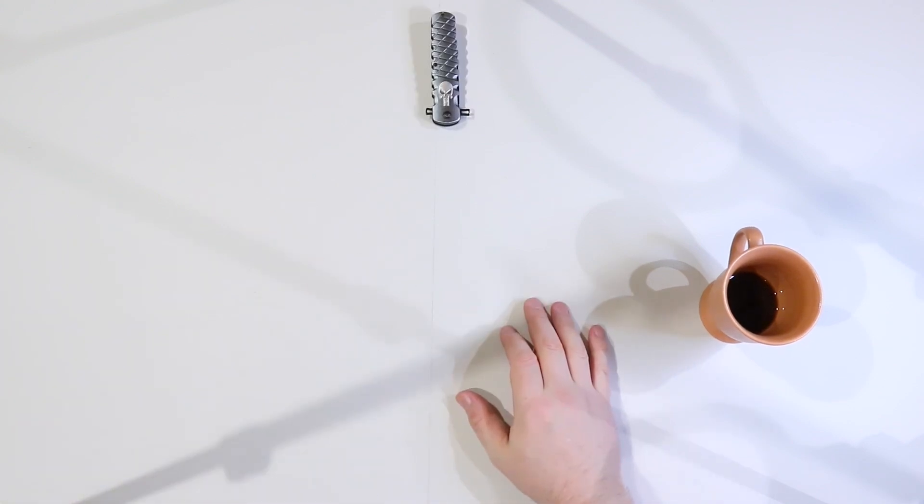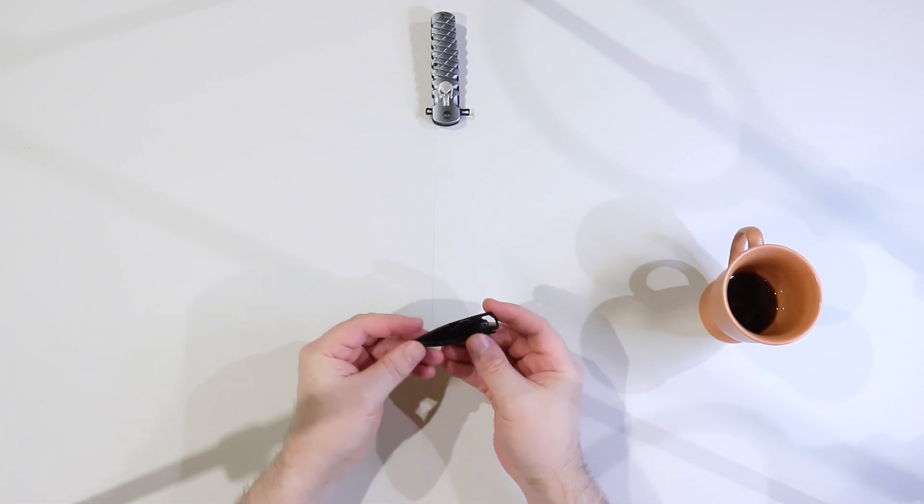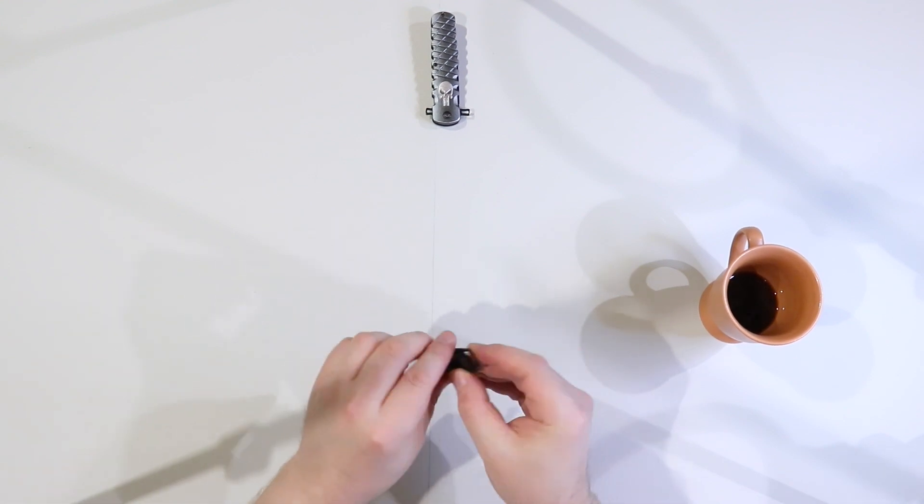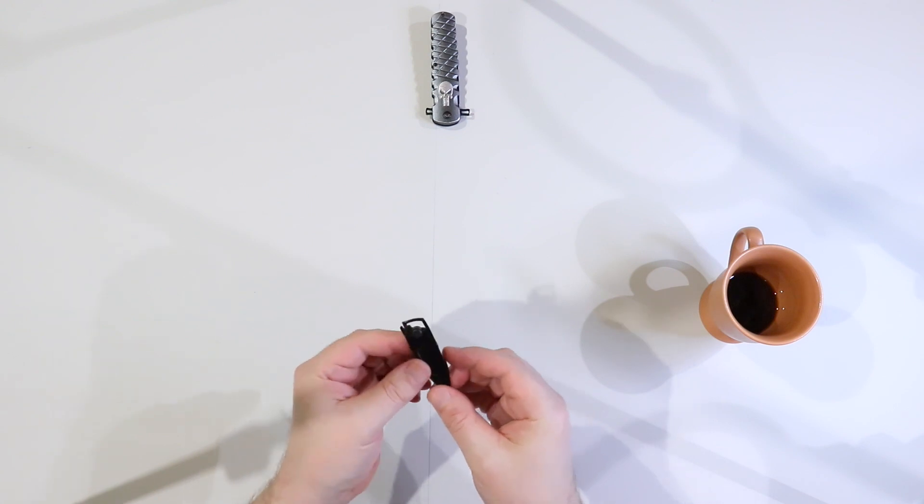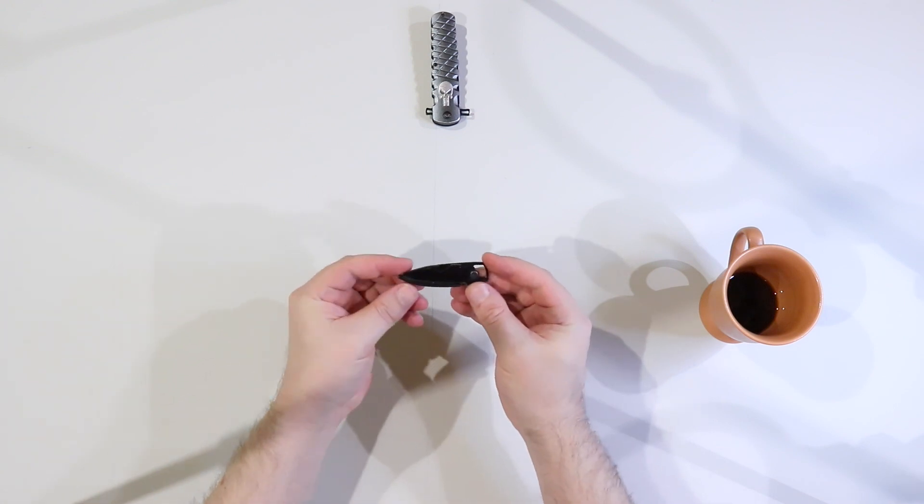But when we're talking about knives, do you want to see the smallest knife I have? This is, I guess this can be called a multi-tool. It is super small.